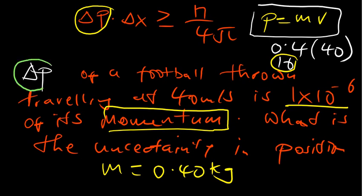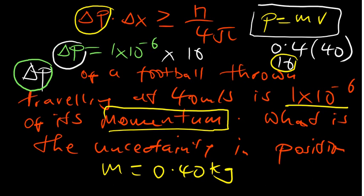The uncertainty in momentum is 1 × 10⁻⁶ of its momentum. So it implies we need to multiply 1 × 10⁻⁶ by the actual momentum, which is 16, to get the uncertainty in momentum. The momentum you calculate is not directly the uncertainty — there will be a guiding principle in the question to help you determine the uncertainty in momentum.